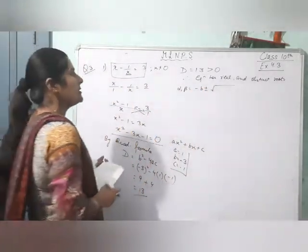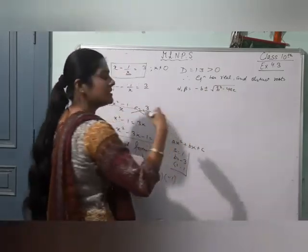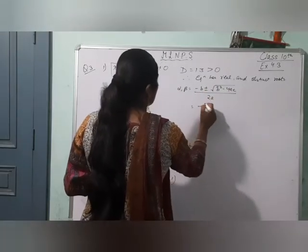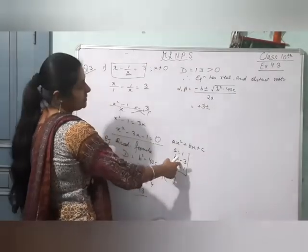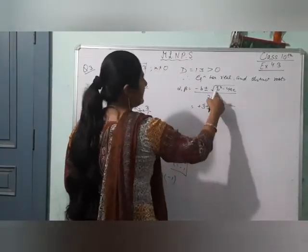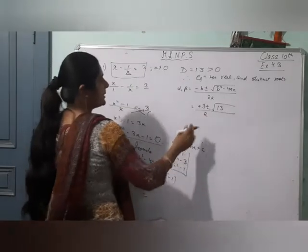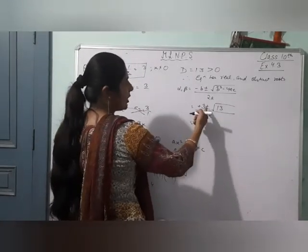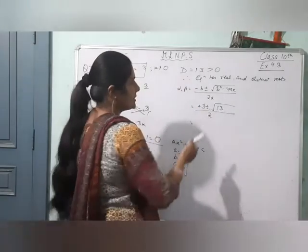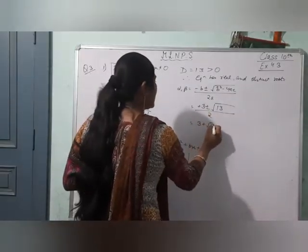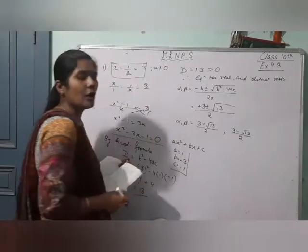By the quadratic formula: x equals minus B plus minus under root D, divided by 2A, where D is B square minus 4AC. Putting values: minus of minus 3 gives plus 3, plus minus under root of D. D is 13. So we get 3 plus root 13 by 2, and 3 minus root 13 by 2. These are the values of alpha and beta.